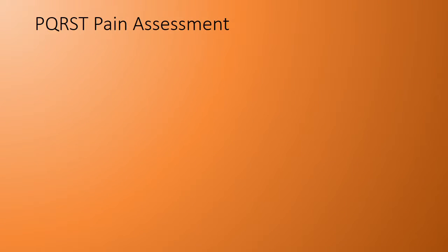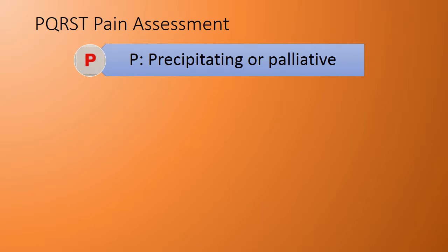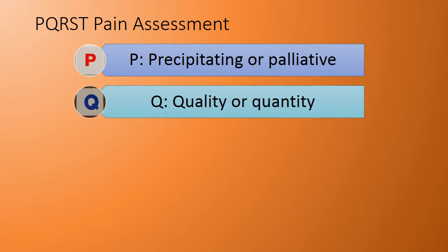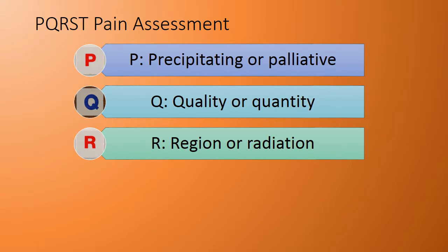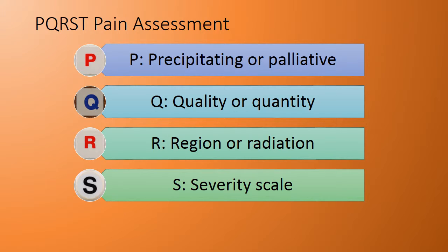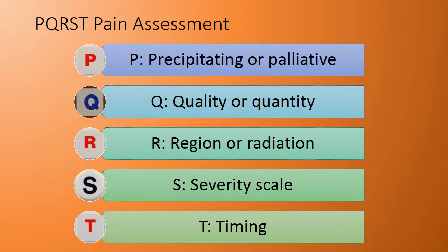The PQRST pain assessment framework: P — precipitating or palliative factors; Q — quality or quantity; R — region or radiation; S — severity scale; T — timing.